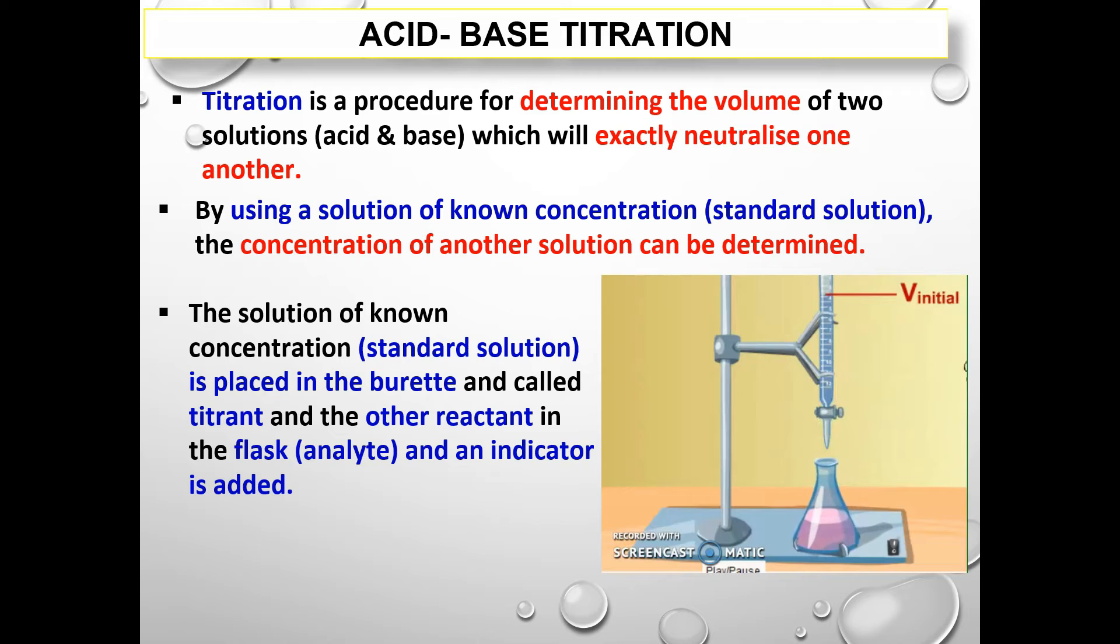The other reactant is placed in the flask or called analyte, and an indicator is added. The titrant is then added gradually until the completion of neutralization is signaled by an indicator. This point is called the endpoint. The volume of titrant used for the reaction is read from the burette scale. Because the titration technique is based on the reactants' volume, it is also called volumetric analysis.